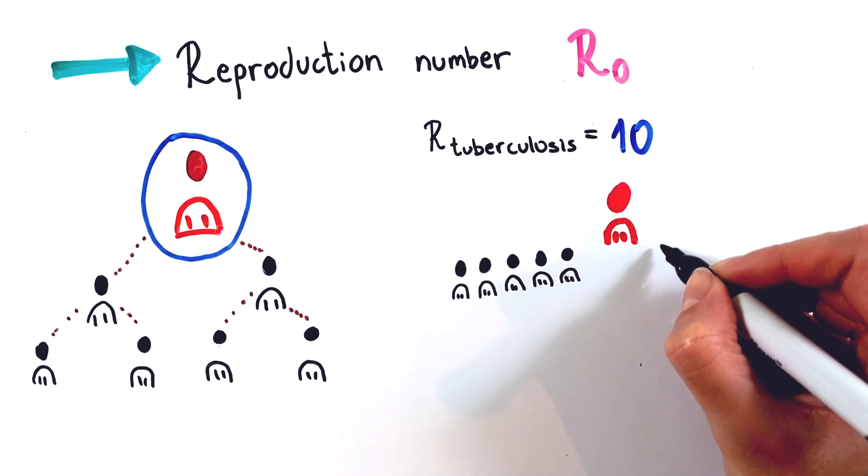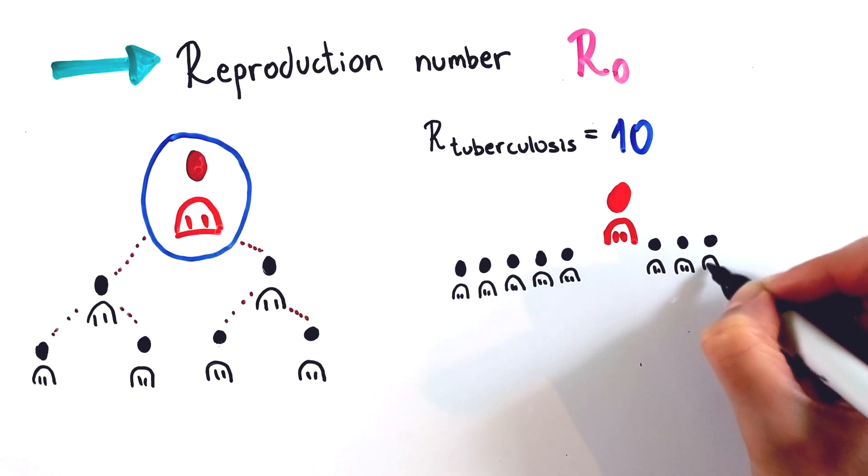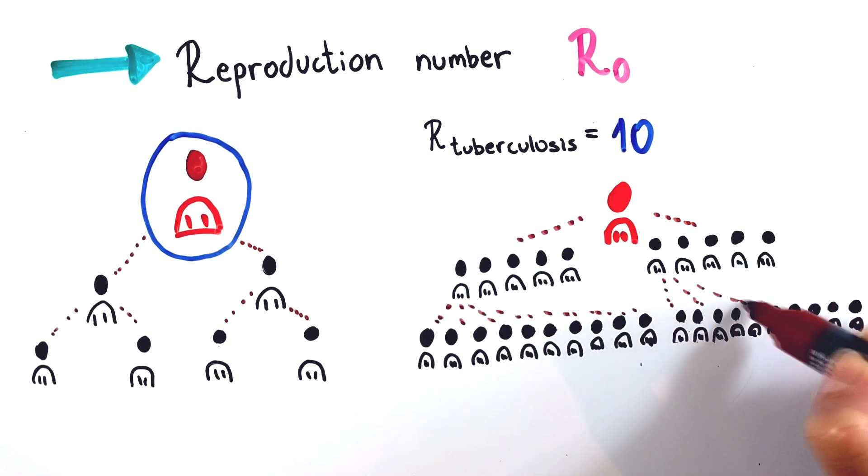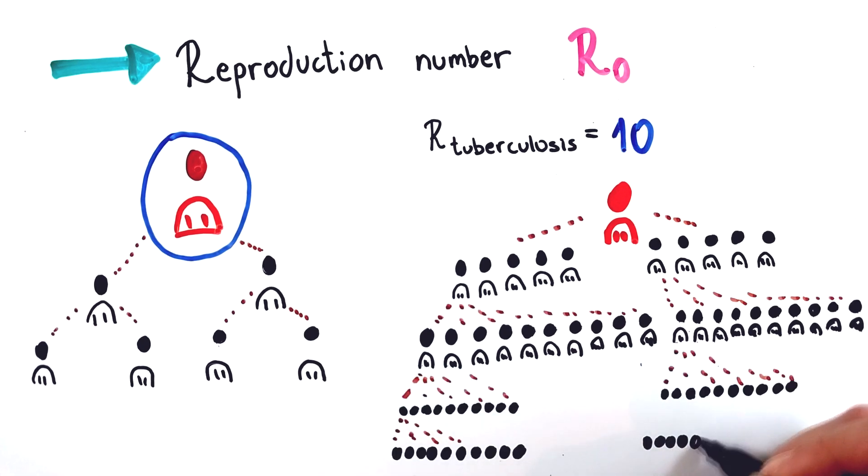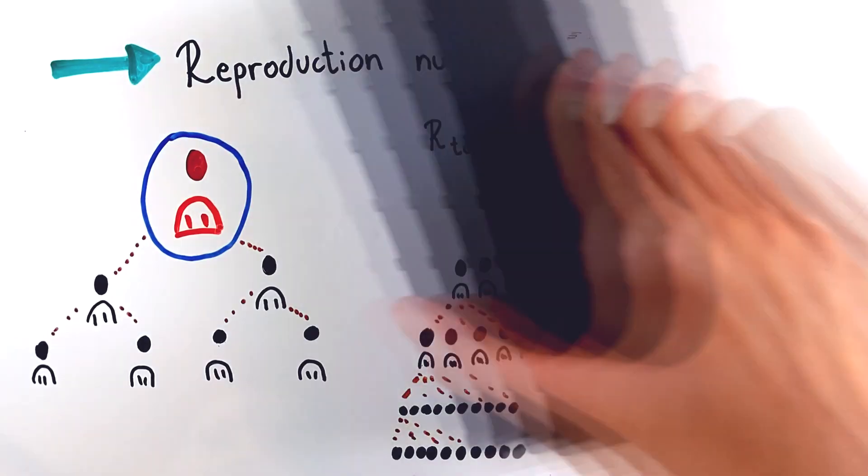For example, an R0 of untreated tuberculosis is 10, meaning a single person can infect on average 10 people in an unvaccinated population. Just imagine how this chain of infection can progress from one person to the next.